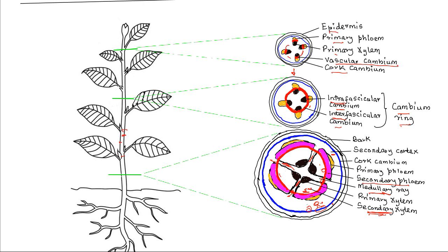Mature cork cells are impregnated with a fatty substance known as suberin, which makes the cells impervious to air and water. The cork cells may also be filled with waste products such as tannins and resins, causing them to die. These cork cells increase in number and become the bark of the stem.